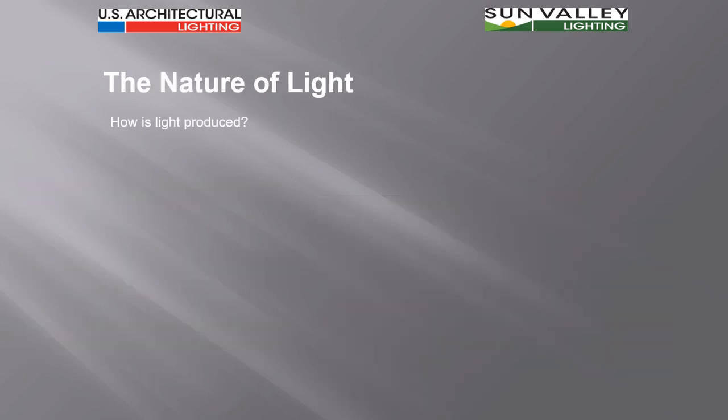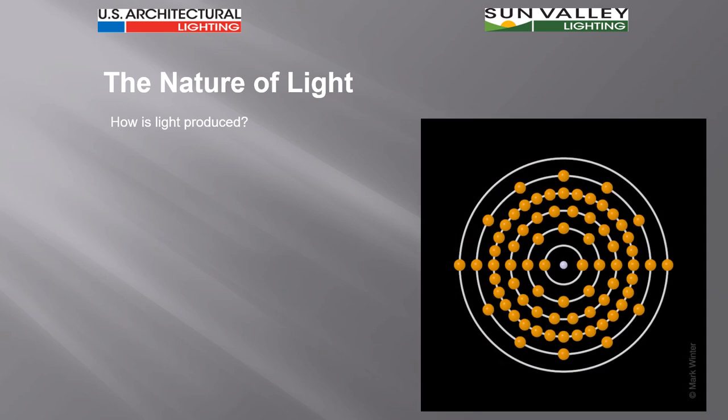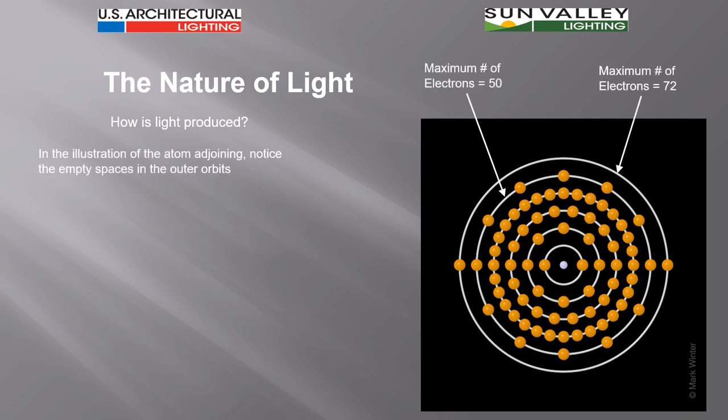Now how is light produced, though? What's the process? It's kind of the reverse of this. Let's take a look at the example or the illustration of the atom that you see here on the right. This atom in its outermost band, its sixth band, can have a maximum of 72 electrons, and in the next to the outer band would be 50.